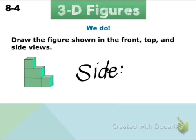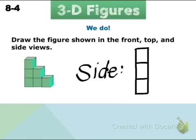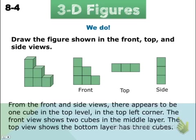Finally, we want to think about what it looks like from the side point of view. We won't be able to tell that there's depth to it, but we'll just see each of these sides represented. From the front and side views, there appears to be one cube in the top level in the top left corner. The front view shows two cubes in the middle layer, and the top view shows the bottom layer has three cubes. Taking all three of those pieces and putting them together gives us a full description of the figure.